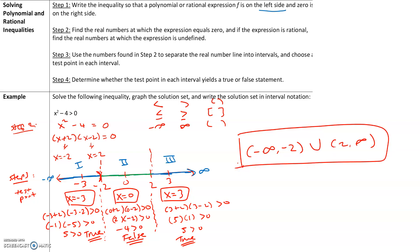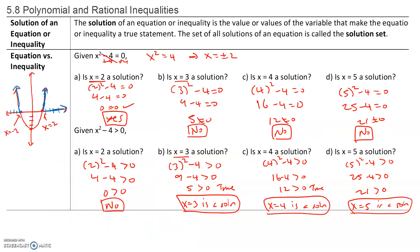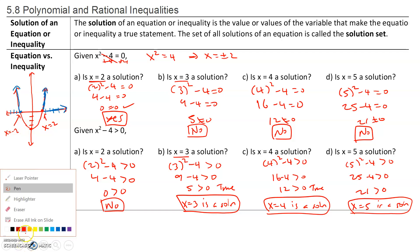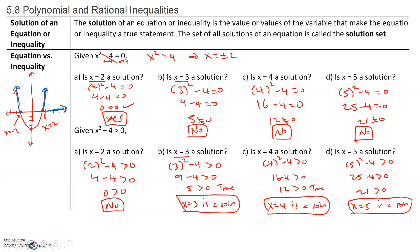We can actually see that on the graph: the graph has a positive value — it is above 0 — when x is greater than 2 or when x is less than negative 2. On those two intervals, the graph is above 0, which we can see graphically.